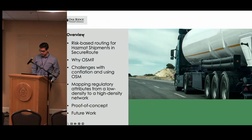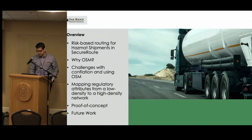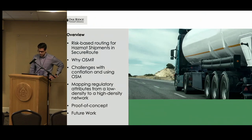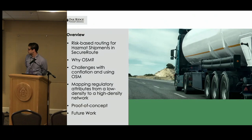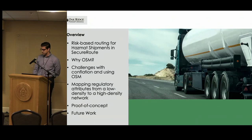To go over what I'm going to cover: first I'm going to talk about the risk-based routing application that we're working on. It's risk-based routing for routing hazardous material shipments across the United States, and we do that in our application SecureRoutes. Next I will go over why we decided to use OSM for this purpose. Then I'm going to talk about some challenges that I ran into conflating between an in-house network and OSM itself. And then I'm going to go over a technical dive into mapping the regulatory attributes from a low density to a high density road network, and show the proof of concepts and briefly go over what's coming next.